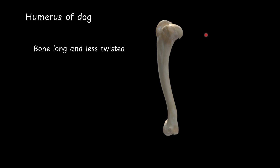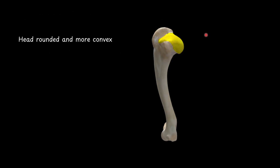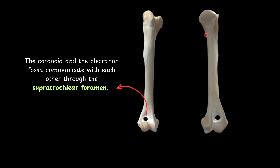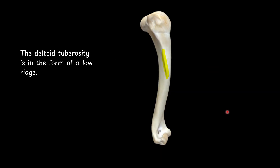Humerus of dog: the bone is long and twisted, and the head is rounded and more convex. A very important feature is that the coronoid and olecranon fossae communicate with each other through the supratrochlear foramen. The deltoid tuberosity is in the form of a low ridge, and the musculospiral groove is not prominent.